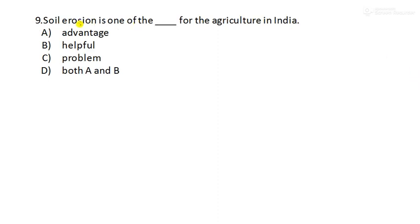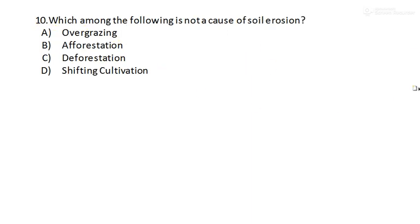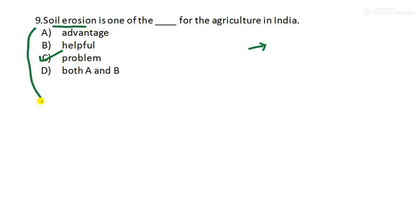Next is question number 9. Soil erosion is one of the blank for the agriculture in India. So you must know the meaning of soil erosion. It is the removal of top most layer of the soil. Because of that fertility will be lost. So it is not good for agriculture. Therefore it is a problem of India. It is not an advantage or helpful. It is a problem. So you have to remember this. Soil erosion is a problem. And what will be the solution to this soil erosion? Can you tell me the answer? Take it as homework. In the comment section you can write solution to soil erosion and write the answer.